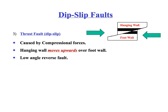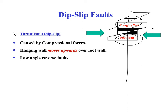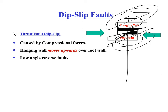A thrust fault, as I said, is just simply a low-angle reverse fault. If I were to draw a vertical line down through there, the block I hit first is the hanging wall and the block I hit second is the foot wall. I can tell the movement occurred because the black sedimentary layer no longer lines up. So the hanging wall moved up and the foot wall went down — this is a reverse fault. And because the angle is so low, I can tell that it's a special type of reverse fault called a thrust fault.